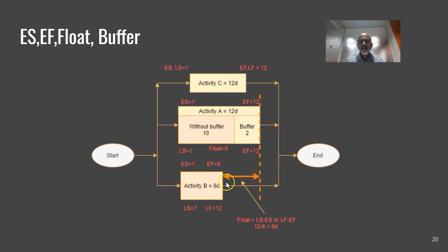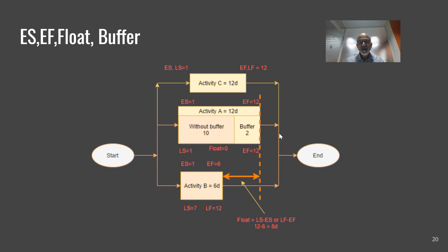Activity B can be delayed by 6 days without affecting the project end date, so we say activity B has a float of 6 days. The longest path in the network we call the critical path, and activities on the critical path have zero float. This project has two critical paths: activity A at 12 days and activity C at 12 days. Activity B is not on the critical path — activities on non-critical paths have float.